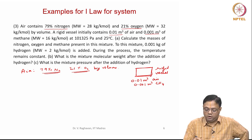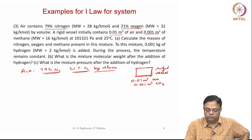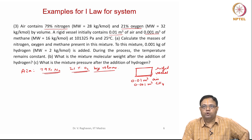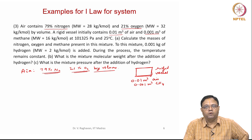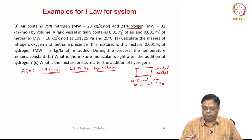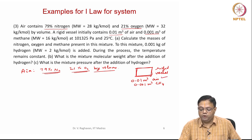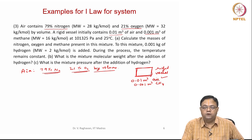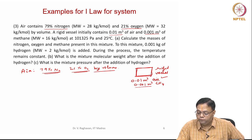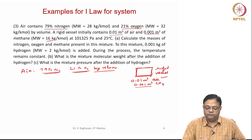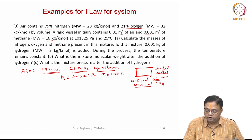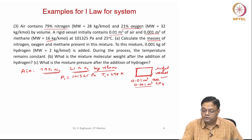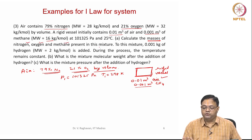Air contains 79 percent of nitrogen and 21 percent of oxygen. Air itself is a mixture of several gases — it contains argon, CO2, etcetera. The major components are nitrogen and oxygen. The problem starts with a rigid vessel which contains 0.01 meter cube of air and 0.001 meter cube of methane. Molecular weight of methane is 16 kg per kilo mole. Initial pressure is 1 atmosphere, that is 101325 Pascals, and initial temperature is 298 Kelvin or 25 degrees centigrade. Calculate the masses of nitrogen, oxygen, and methane present in this mixture.